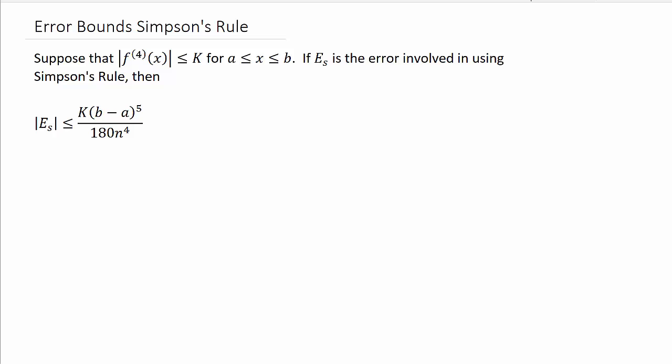Alright, so this one we're going to look for error bounds using Simpson's rule. For Simpson's rule, suppose that the fourth derivative of f(x) is less than or equal to k, where x is between a and b. If E_s is the error involved in using Simpson's rule, then the absolute value of E_s is less than or equal to k times (b - a)^5 over 180n^4.